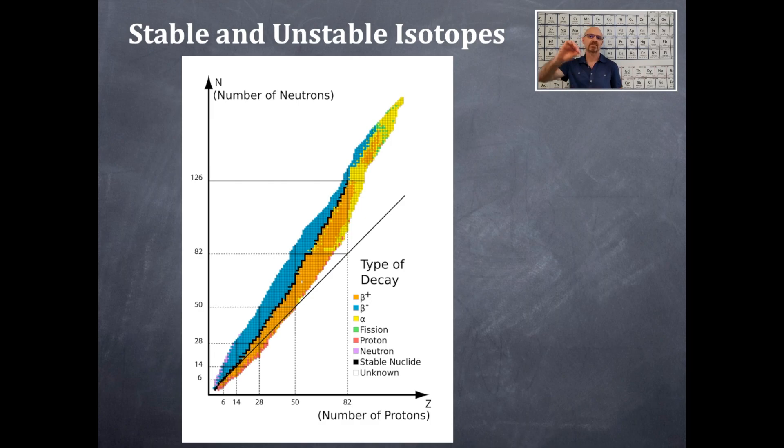There's that band of stability in the middle. And remember, at the N equals Z is less than 20 is right on that line. That's why it's really close there. Hopefully, you enjoyed that.